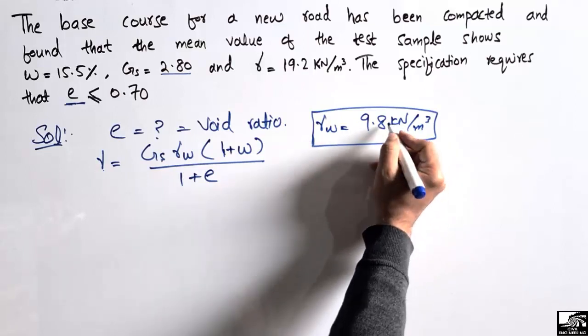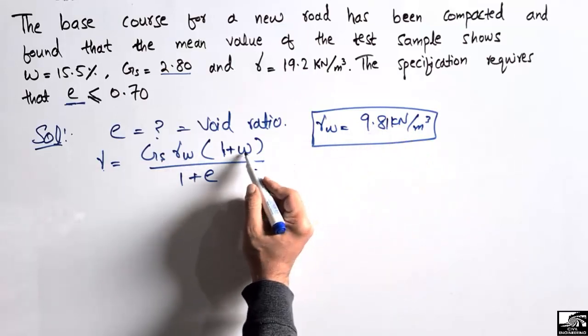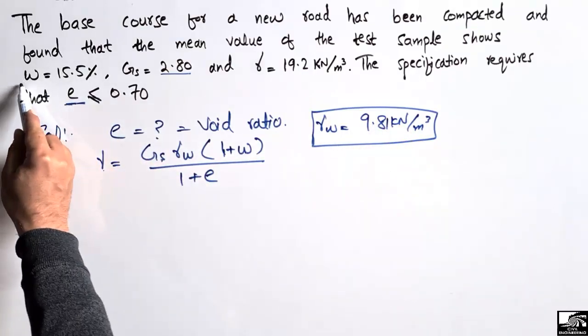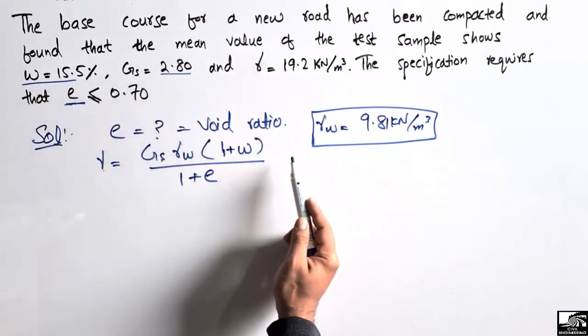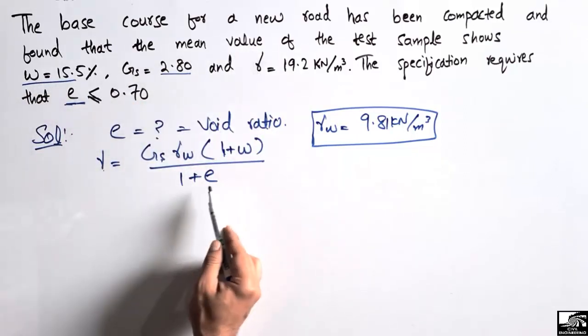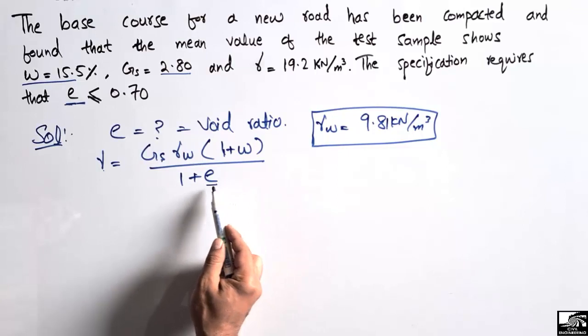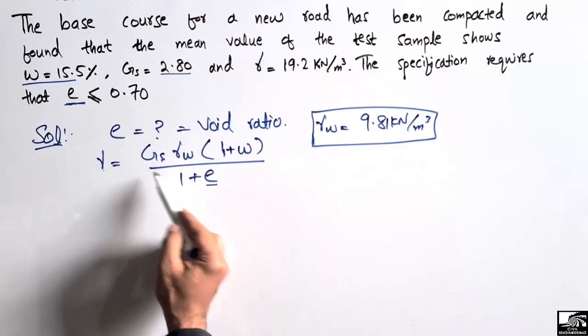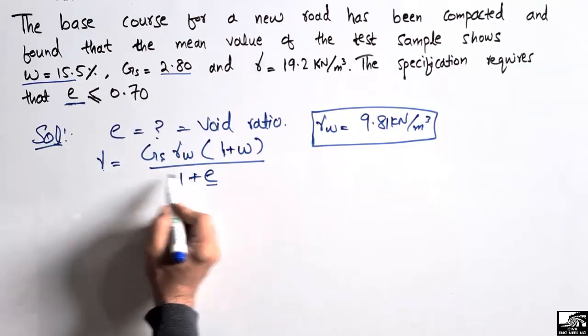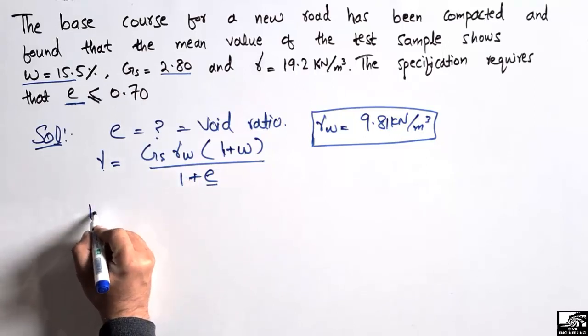This is the standard value for the water. The water content is also given for this soil sample which has been compacted. So we can easily find out the void ratio from this equation by transferring (1 plus e) to the left side.